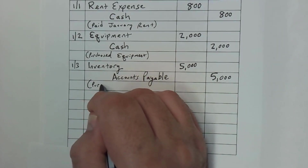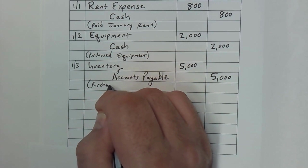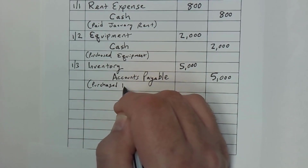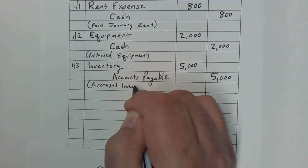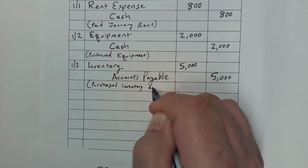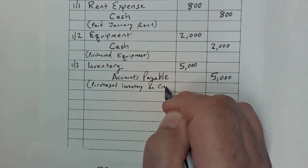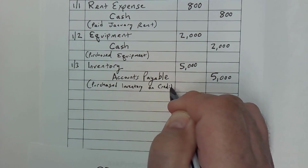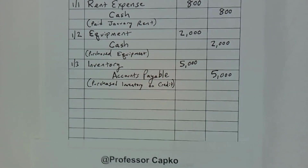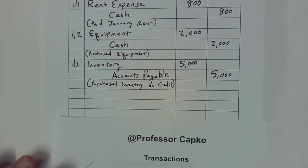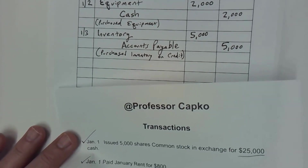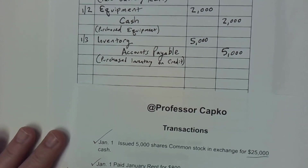The description says 'purchased inventory on credit.' Some of these descriptions are self-explanatory, but it's good to go ahead and put in some sort of description.